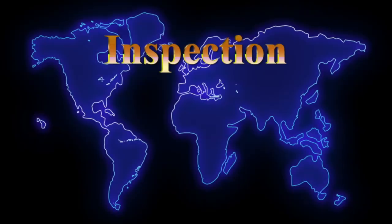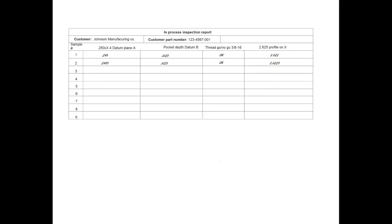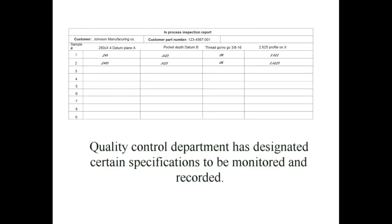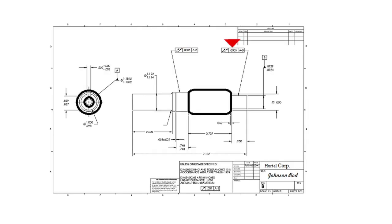This is a brief description of the in-process inspection report. And this is an IIR and it's mated to the blueprint. Now what's happened is the Quality Control Department has designated certain specifications to be monitored and recorded. So your job is to find these things on the blueprint.